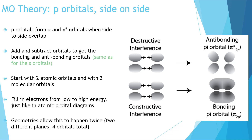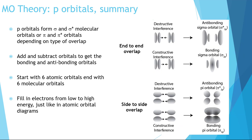To summarize: p orbitals form sigma and sigma-star molecular orbitals if they overlap end-on-end, or pi and pi-star orbitals if they overlap side-on-side. There is only one set per energy level that overlaps end-on-end, but two sets that overlap side-on-side. We add and subtract the orbitals to get bonding and anti-bonding orbitals. In total, we start with six atomic orbitals and end with six molecular orbitals, which we fill with electrons from low to high energy.